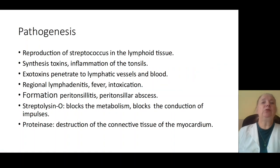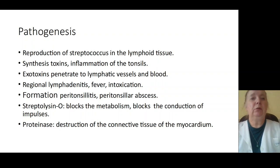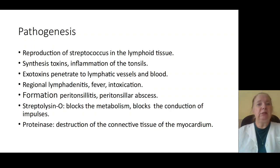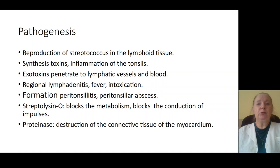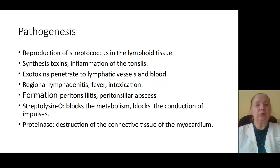Let's speak about the pathogenesis of angina. Streptococcal reproduction occurs in lymphoid tissue with synthesis of exotoxins, which cause inflammation of tonsils, formation of hyperemia, hyperplasia, prevalent exudation of lacunae, and inflammatory alterations of the mucus of tonsils.